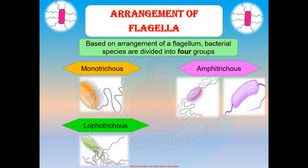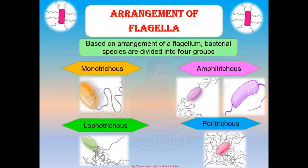Lophotrichus — bacteria showing a tuft of flagella at only a single pole or one end. An example is Helicobacter pylori. Peritrichus — flagella distributed all over the body. The best examples of peritrichus bacteria are E. coli and Bacillus subtilis.